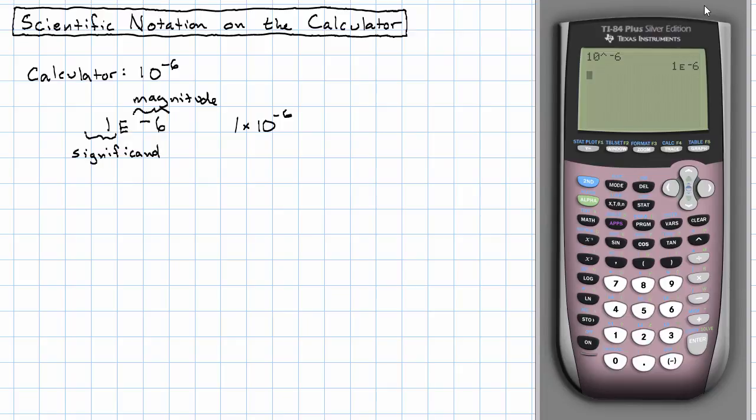So with that in mind, we can use our calculator to calculate things that we couldn't before. For example, we could go to the calculator and say, what is 300 to the seventh power? And the calculator responds, 2.187 times 10 to the seventeenth. If we wanted to write that in standard notation, we probably don't, but we could.